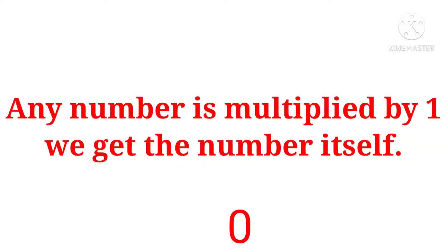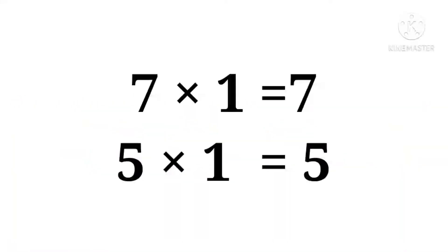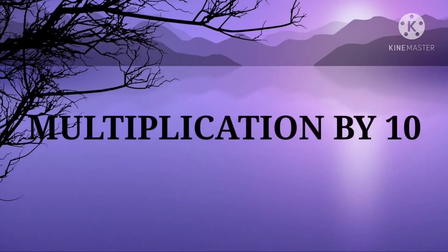Any number multiplied by one, we get the number itself. For example: seven multiplied by one equal to seven; five multiplied by one equal to five.